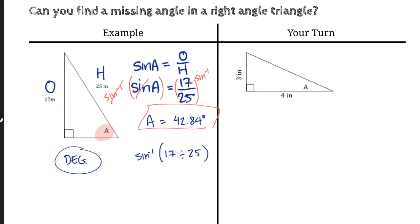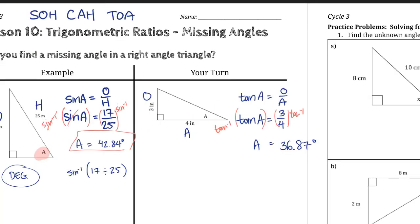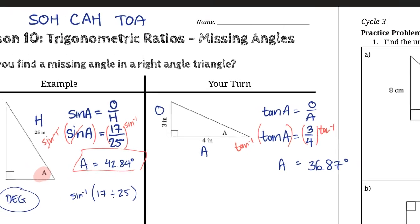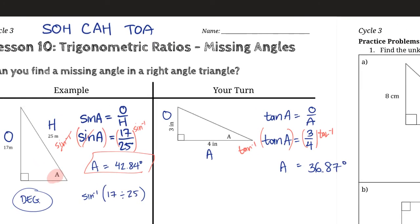I want you to try the same thing for the second question. Pause the video here, try it yourself, unpause it, and you will see the solution. So the answer you should have gotten was 36.87 degrees. And the way I did that was that I identified, first of all, the sides we're concerned with here are the opposite and the adjacent to angle A. So then, which one uses opposite and adjacent? Tan, right?